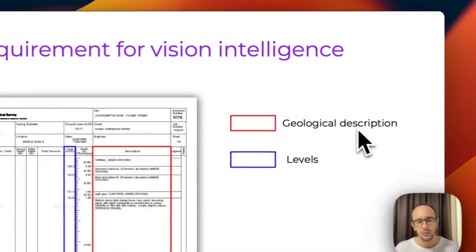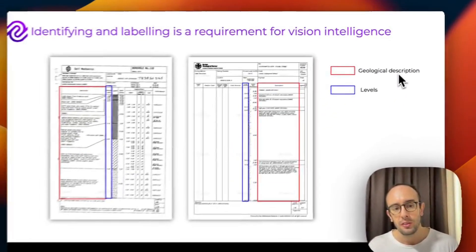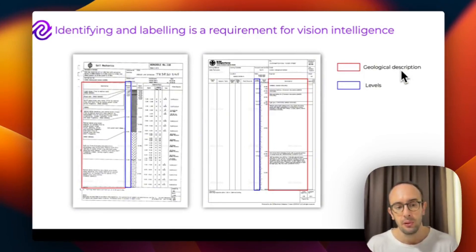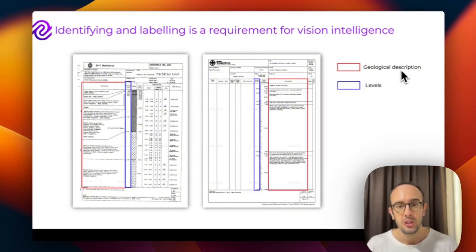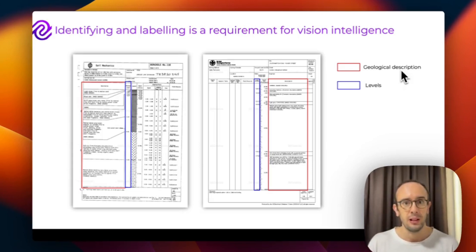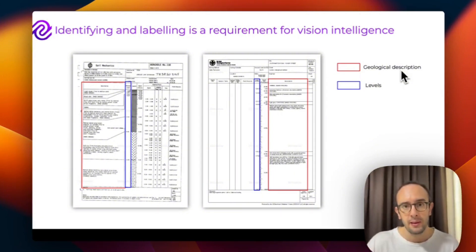With vision intelligence, you need to feed in a lot of labelled data using bounding boxes — the red and blue boxes you can see here — where you label tonnes of data. In our case, BGS boreholes and open-source borehole log information. We label this and feed it into a vision intelligence model, which is trained to detect where geological descriptions are located, where levels and depths are located, associate this information together, and create a structured data format in a database.